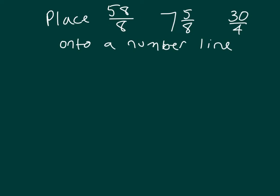Let's work through another problem. Here we have 58 eighths, 7 and 5 eighths, 30 fourths to place onto a number line. Let's go ahead and decompose 58 eighths, so that we can write it as a mixed number. It will make it easier to place it onto the number line.